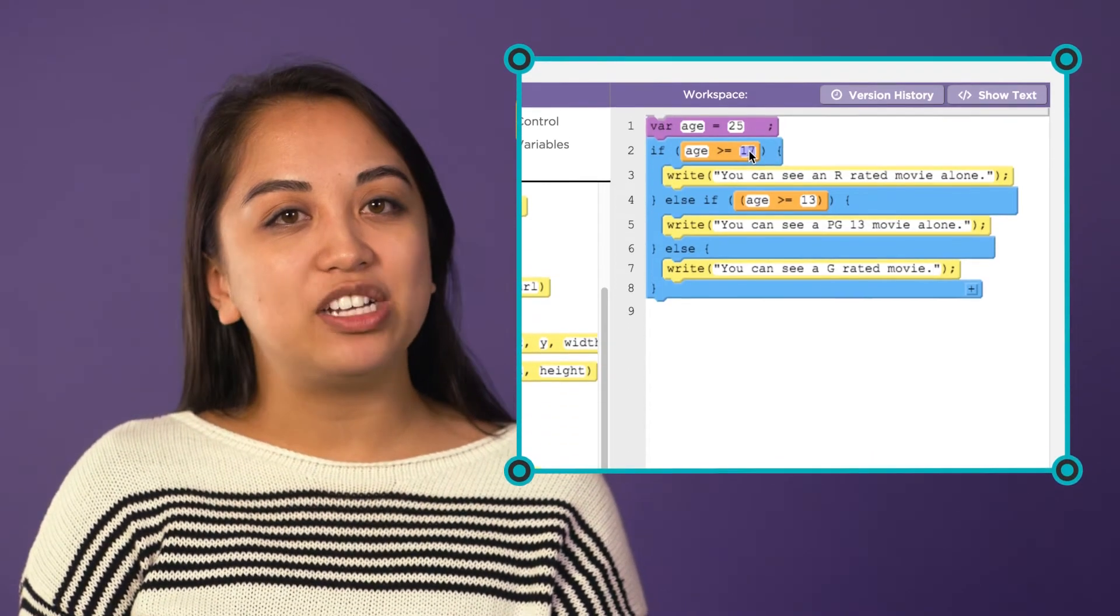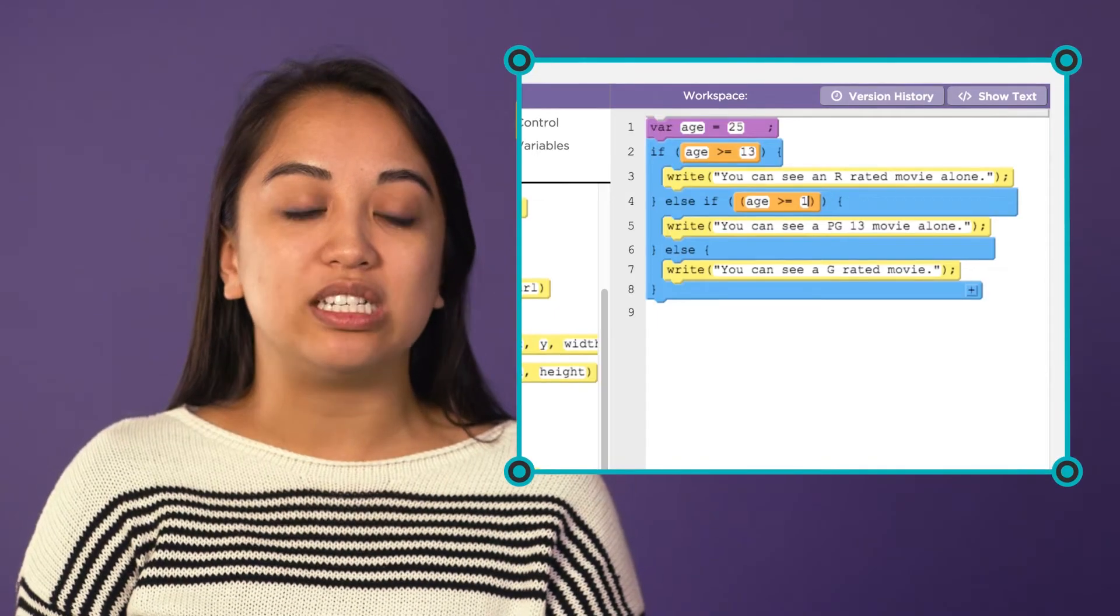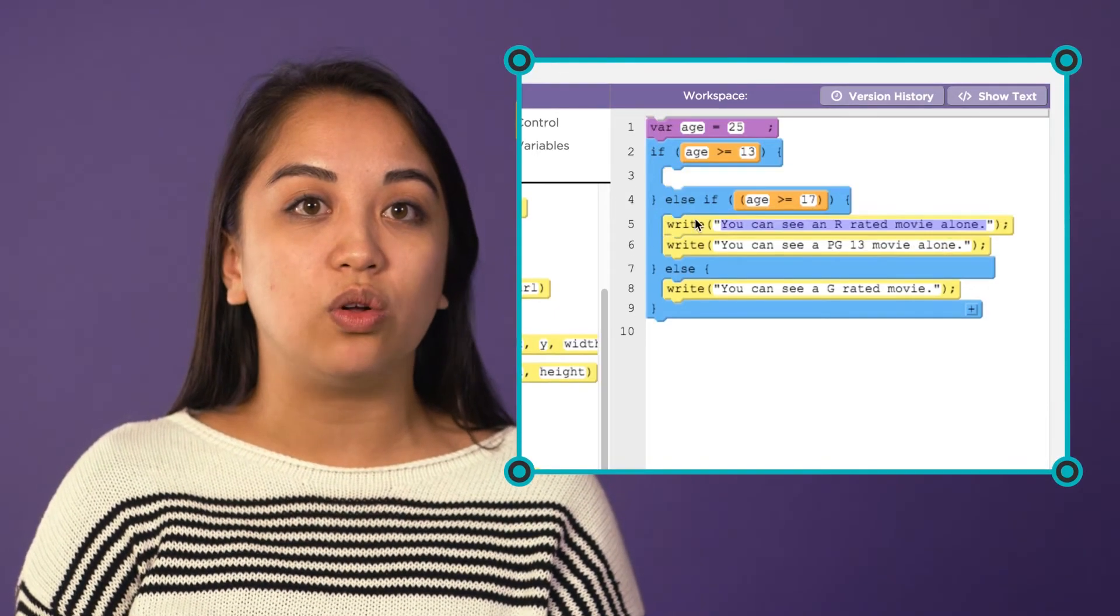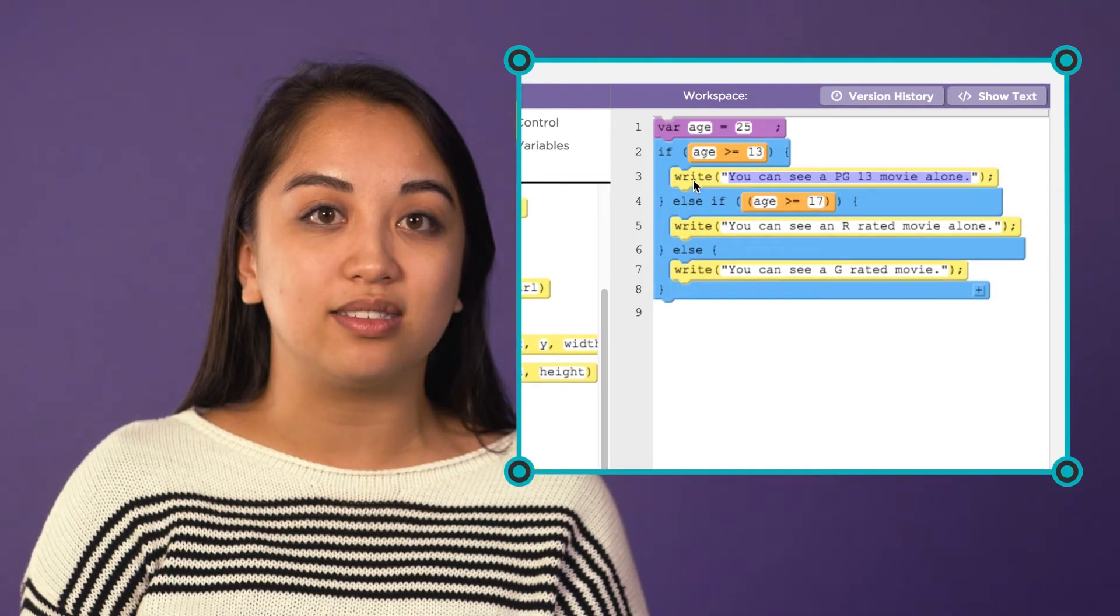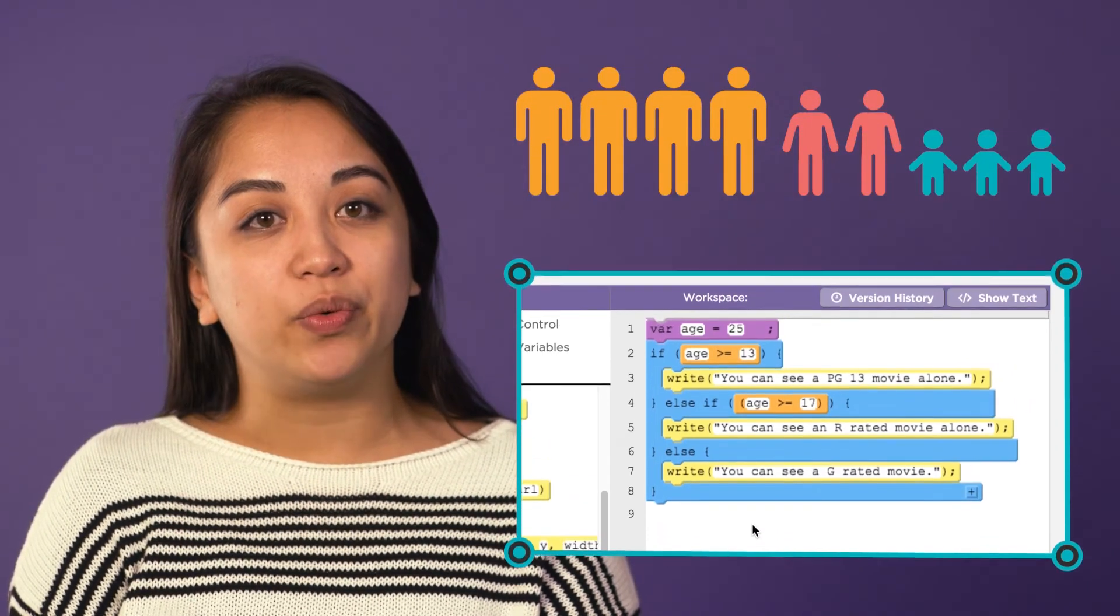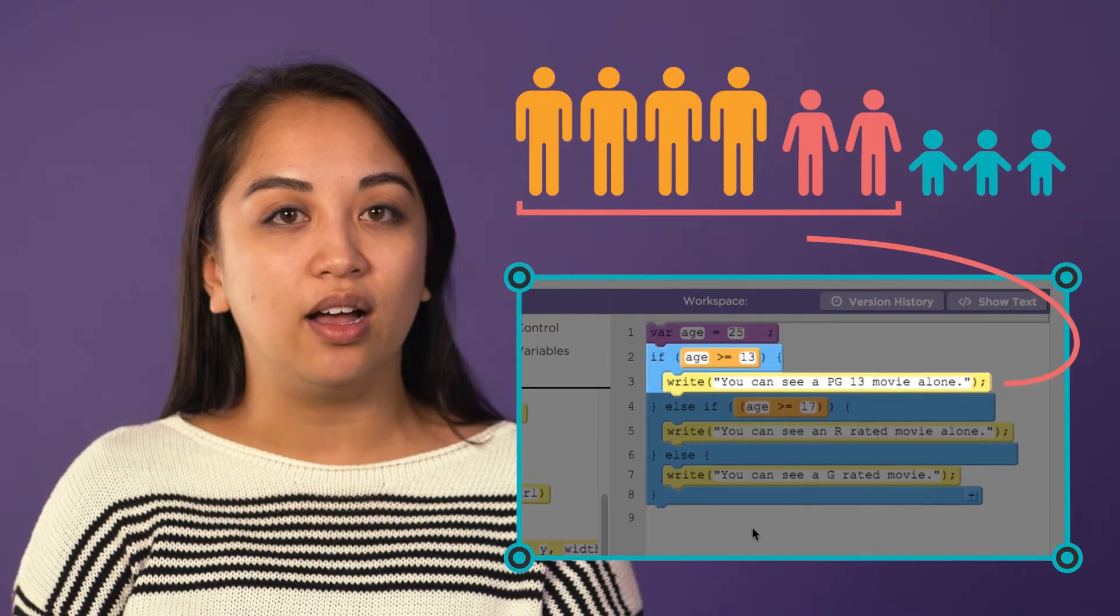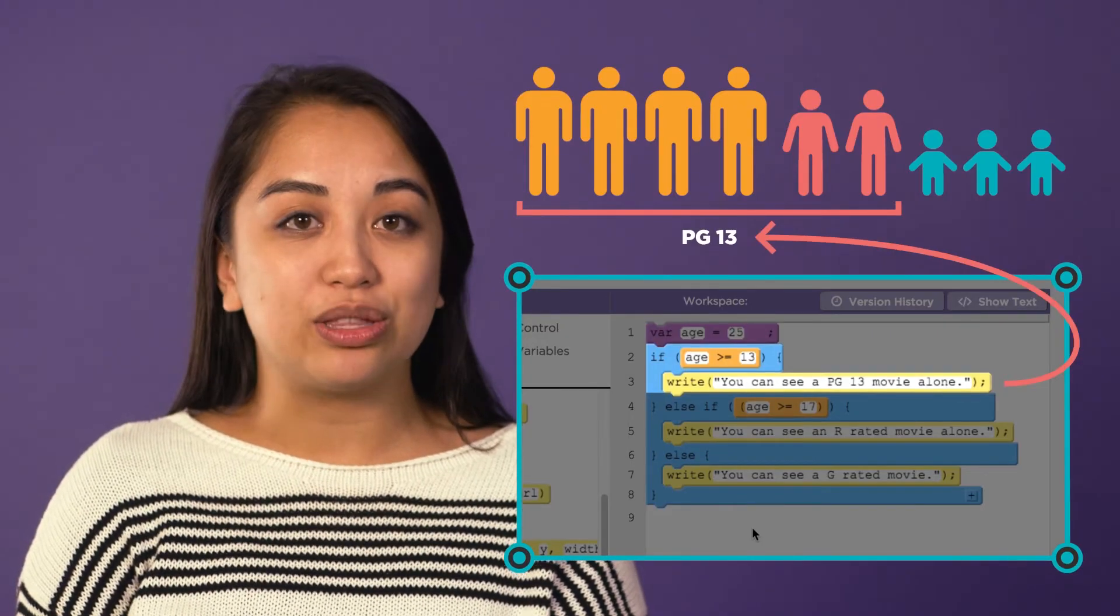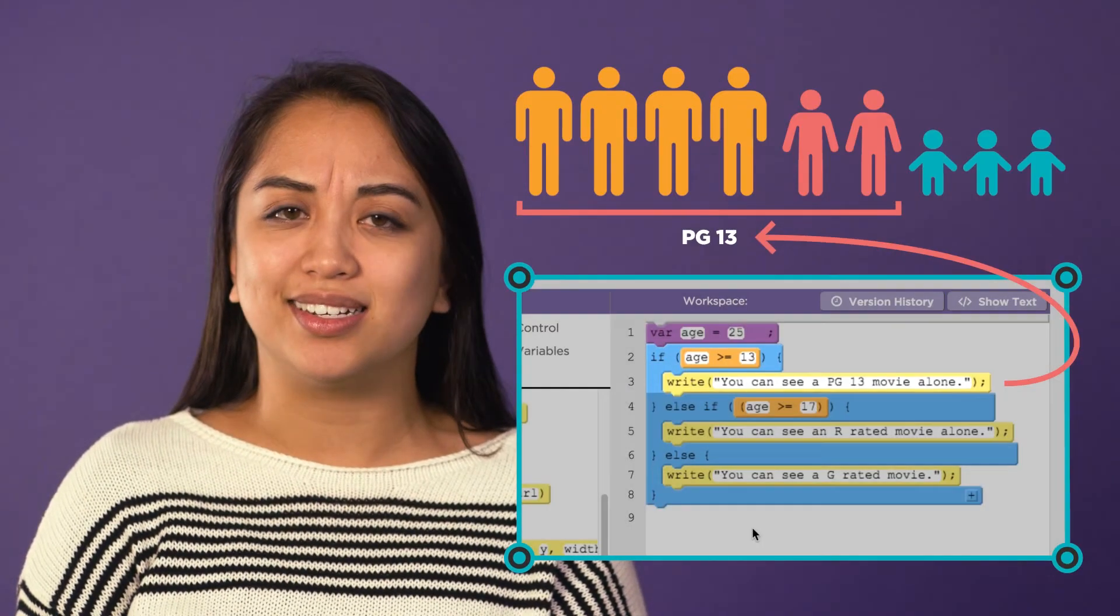In our example, imagine we had switched the code so that the first condition checked if the user was old enough to see PG-13 movies. Like this. This would mean that everyone who is 13 or older would be told they can only see PG-13 movies, even the adults.